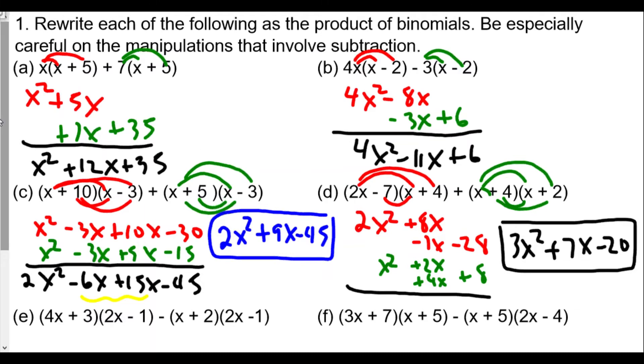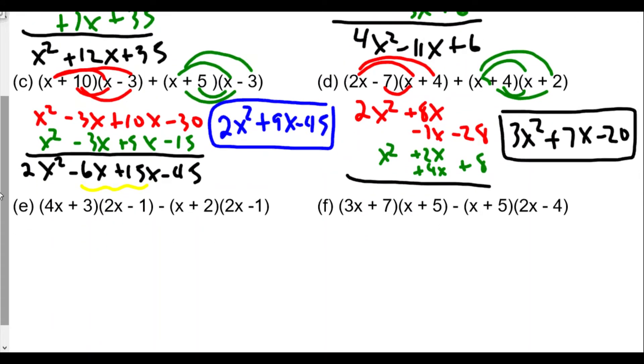For letter E, we get 4x times 2x gives us 8x squared, 4x times negative 1 gives us negative 4x, 3 times 2x is plus 6x, and 3 times negative 1 is minus 3. For this one, we're going to be more careful. I'm going to combine these two together first, then multiply the other binomial and subtract. For the first pair of binomials, we multiply together to get x squared plus 2x minus 3.